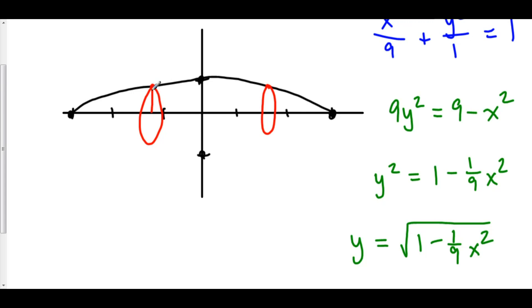That's the radius. We can now rewrite this as the integral from negative 3 to positive 3 of pi r squared. Our r here is the function value, the square root of 1 minus 1 over 9 x squared squared dx. Keep in mind, we are integrating with respect to x because our cross-sections are perpendicular to the x-axis, so we're summing them up along the x-axis.